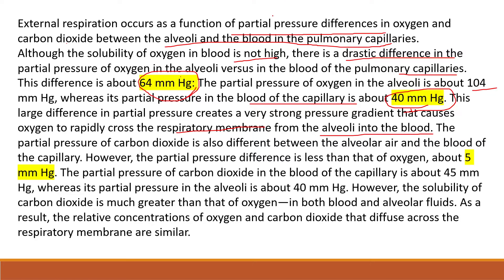The partial pressure of carbon dioxide is also different between the blood and the alveoli. The partial pressure of carbon dioxide in the blood is 45 mmHg, while in the alveoli it is 40 mmHg. This difference drives carbon dioxide out of the blood into the alveoli. That concludes external respiration.